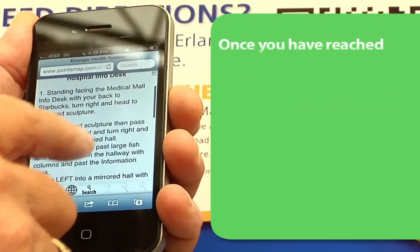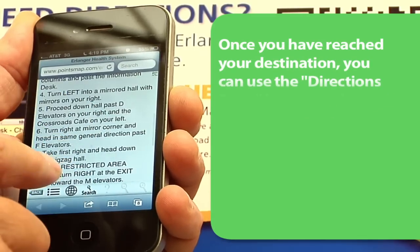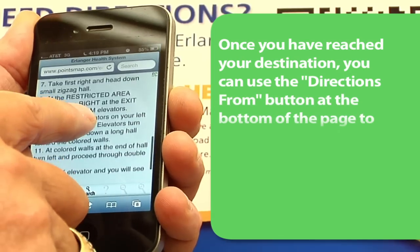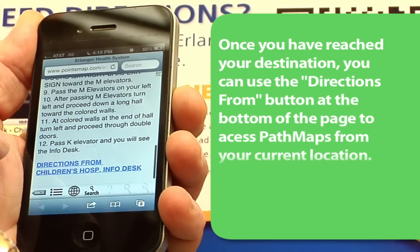Once you have reached your destination, you can use the Directions From button at the bottom of the page to access PathMaps from your current location.